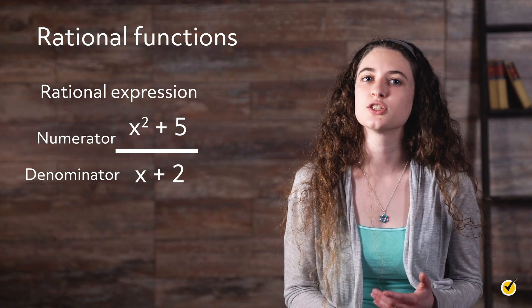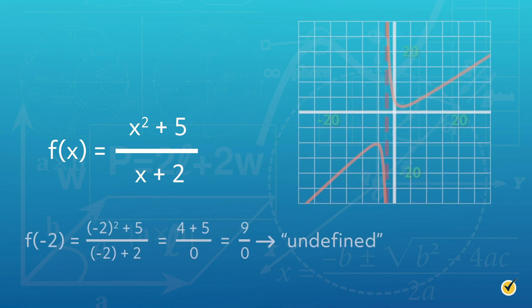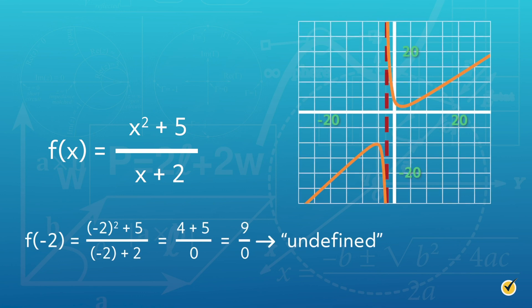For example, consider the rational function f of x equals x squared plus 5 over x plus 2. If this function were to be evaluated at x equals negative 2, we would have an undefined result, as shown. Note that the graph does not exist at the value x equals negative 2. These points of discontinuity in a rational function are referred to as vertical asymptotes. The branches of the graph will approach, but never touch, the excluded values of the domain.